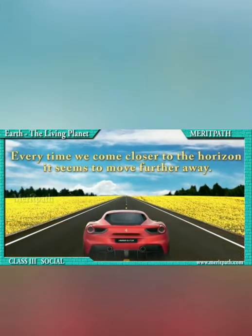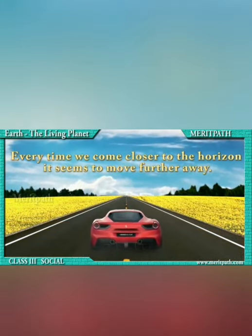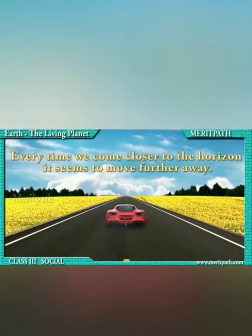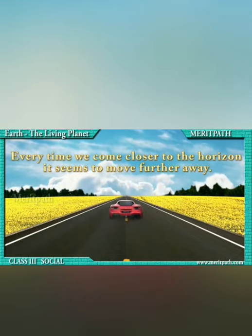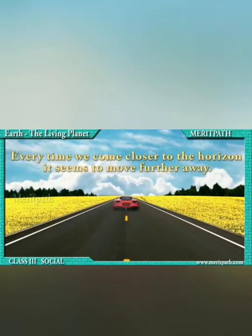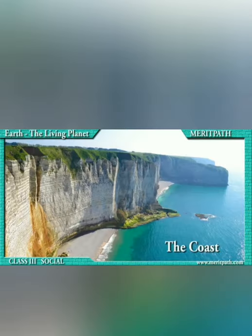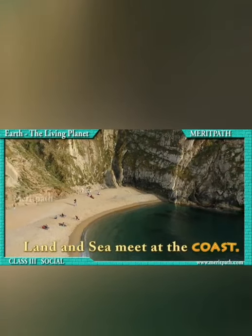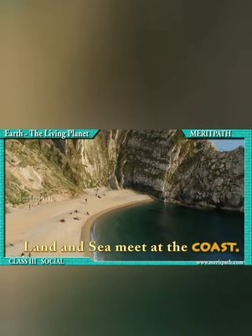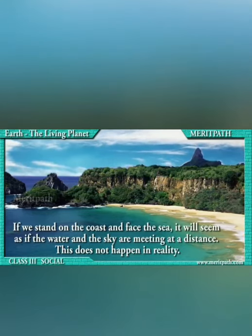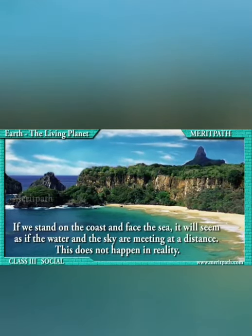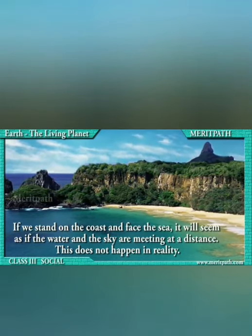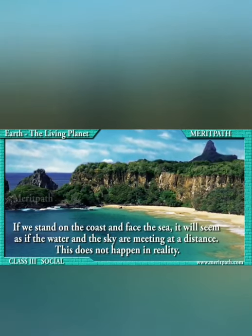Each time we come closer to the horizon, it seems to move further away. But in reality, the land and sky do not meet. The part of the land near the sea is known as the coast. Even at the coast, it appears as if the water from the sea and the sky are meeting at a distance, which is not possible in reality.